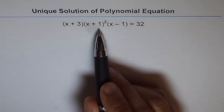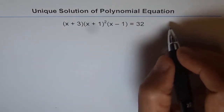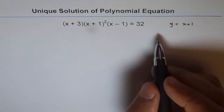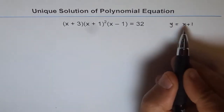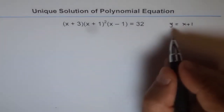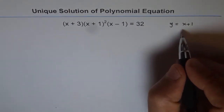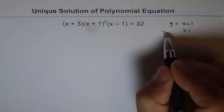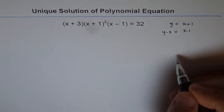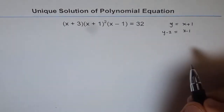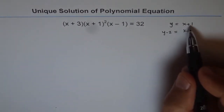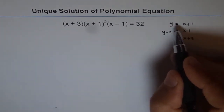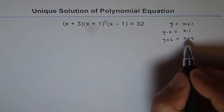Let y equal x plus 1. If y is x plus 1, then what will x minus 1 be? X minus 1 will be y minus 2, correct. You have to take away 2 to get x minus 1. And what will x plus 3 be? If x plus 1 is y, then x plus 3 will be y plus 2, by adding 2.